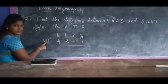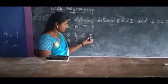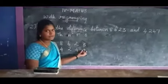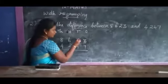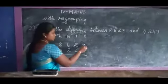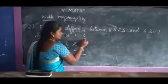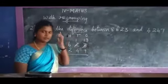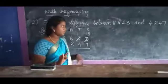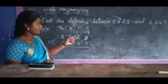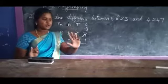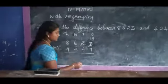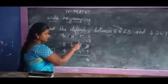Now subtraction is simple. You compare 3 and 7 — 7 is greater, so you have to borrow. 2 becomes 1, balance 1. So 3 becomes 13. 13 in the mind, 7 in the finger: 13 before — 12, 11, 10, 9, 8, 7, 6. So the answer is 6.